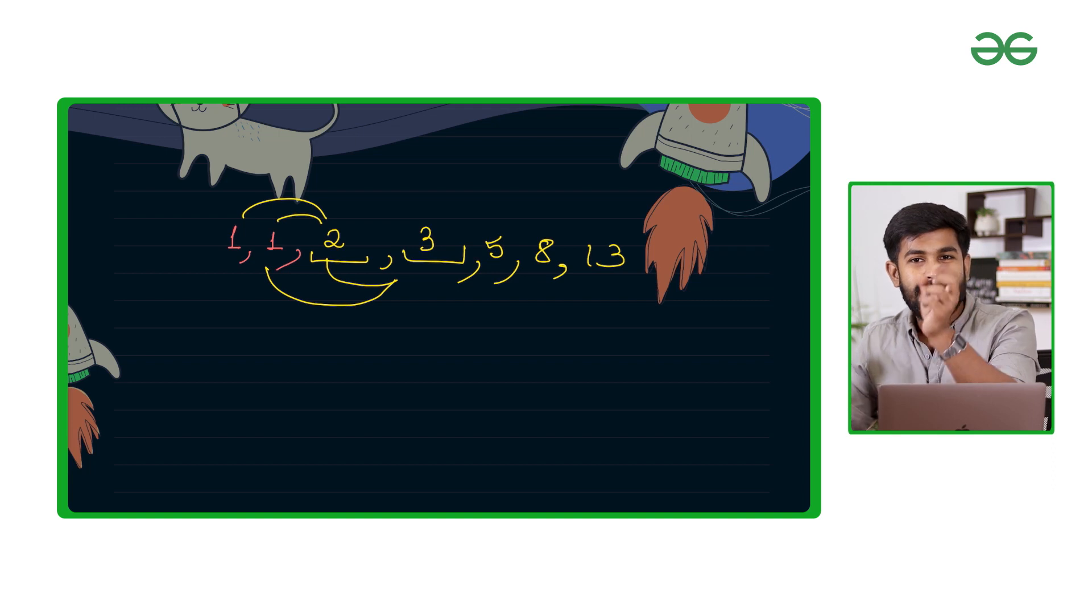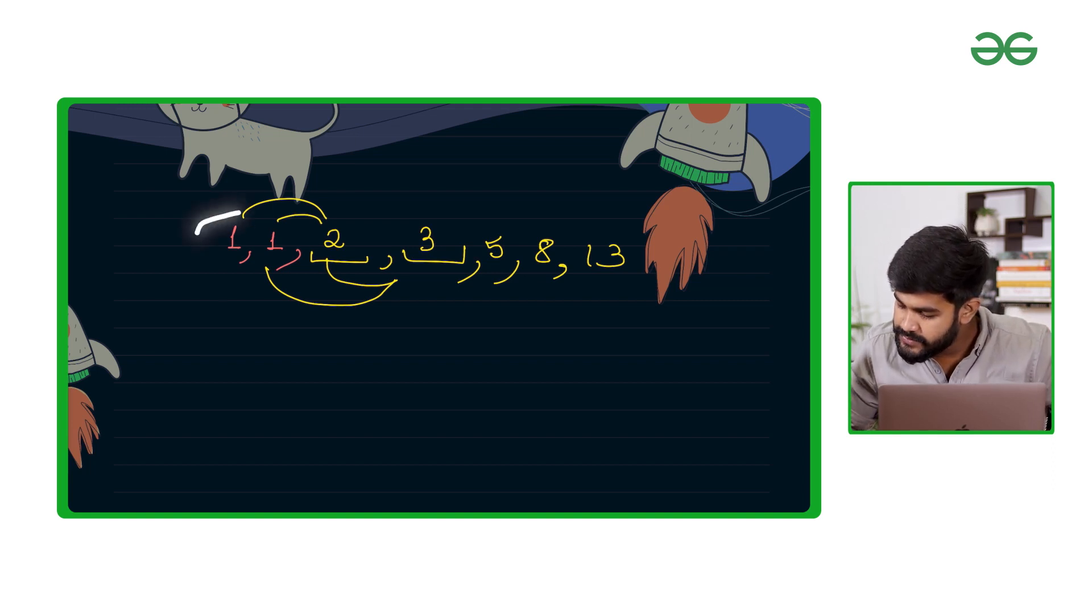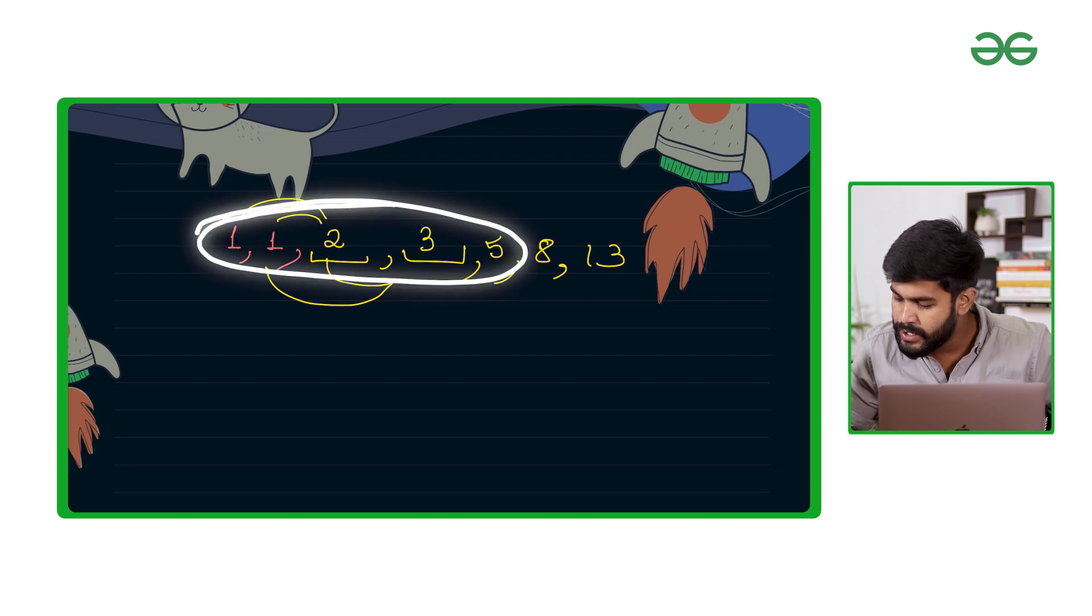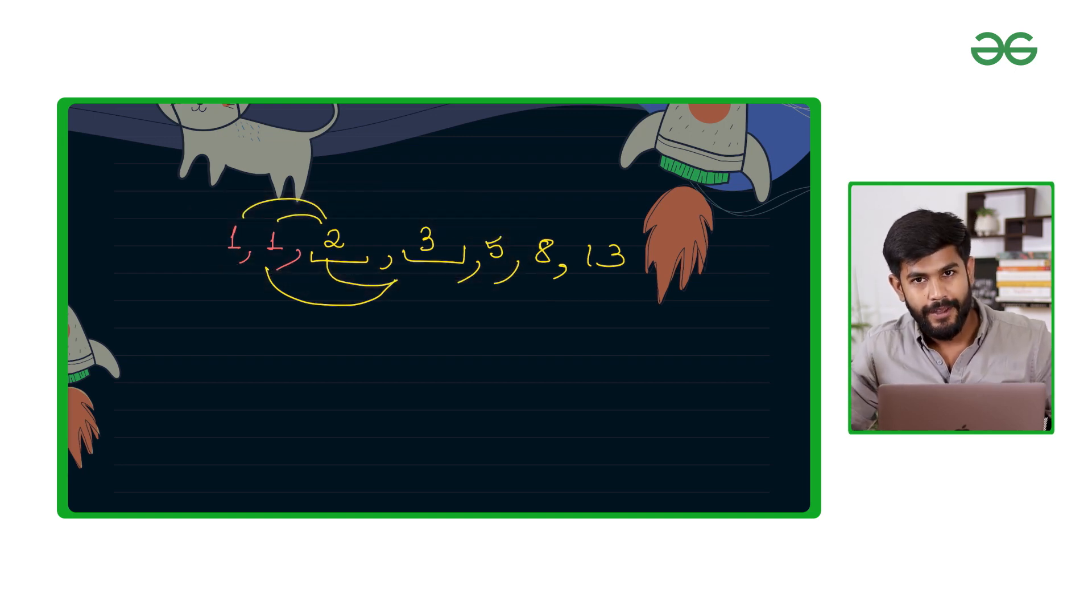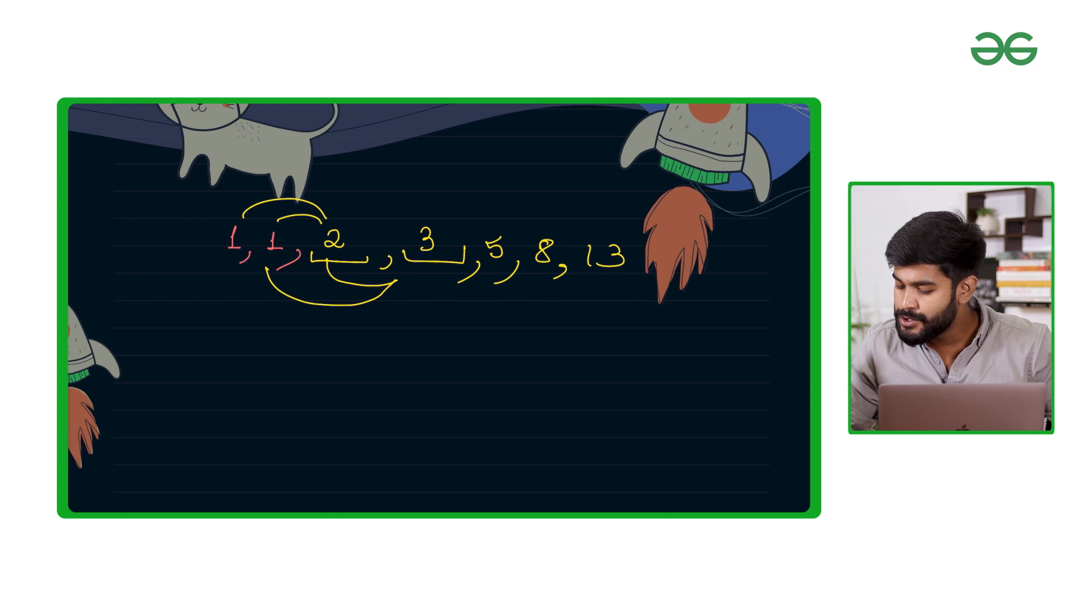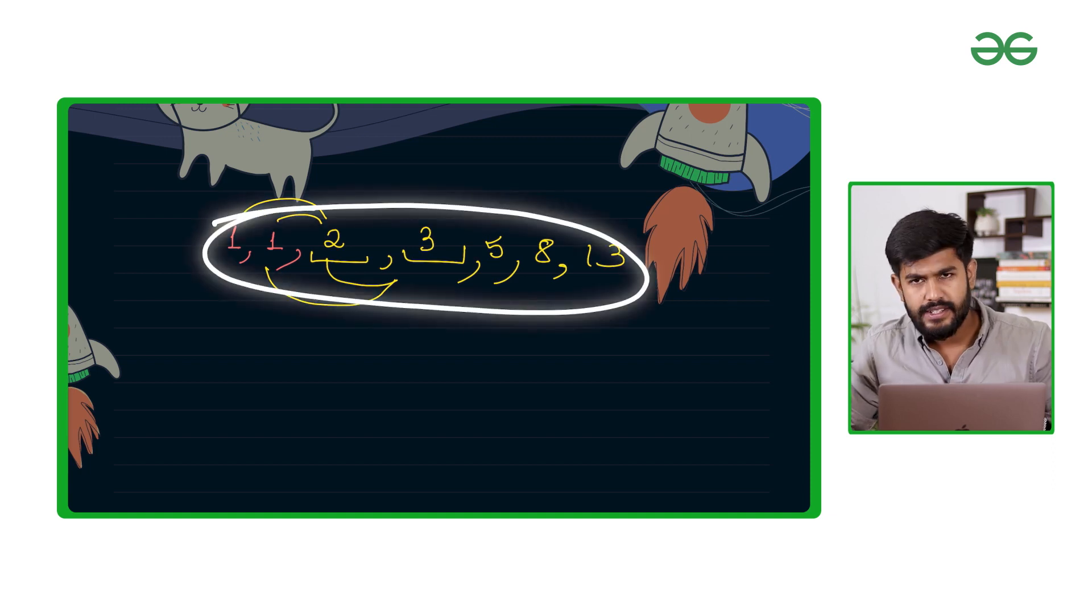The very first sample test case is n equals 5. So the very first five values would be 1, 1, 2, 3, 5. And if n equals 7, this would be the result itself.